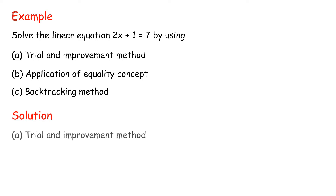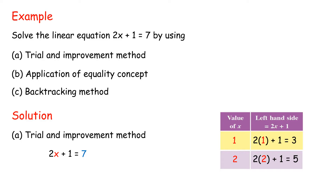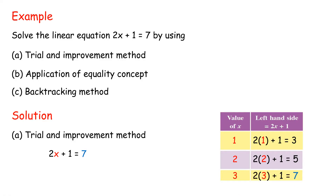Solution (a) Trial and improvement method for 2x + 1 = 7. If x = 1: 2(1) + 1 = 3; 3 ≠ 7, so try a greater value. If x = 2: 2(2) + 1 = 5; 5 ≠ 7, the value is less than and close to 7, so try a greater value. If x = 3: 2(3) + 1 = 7. Thus x = 3 is the solution.